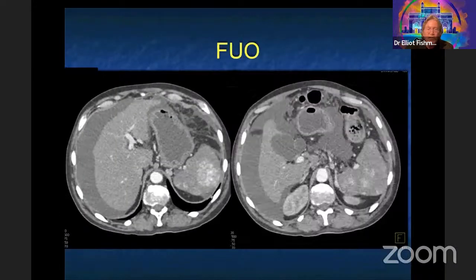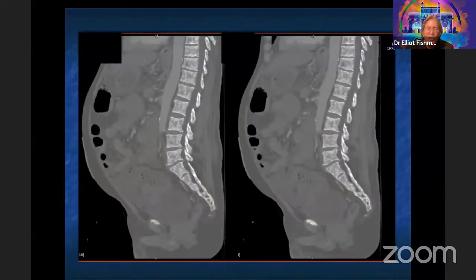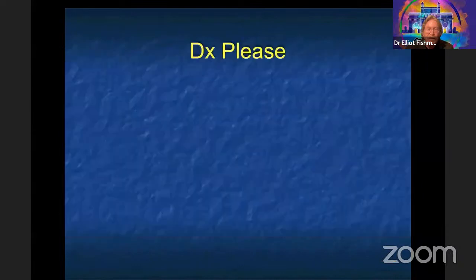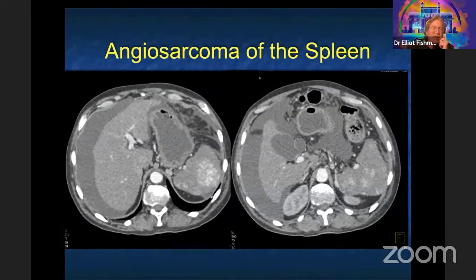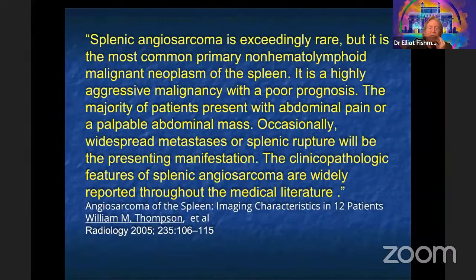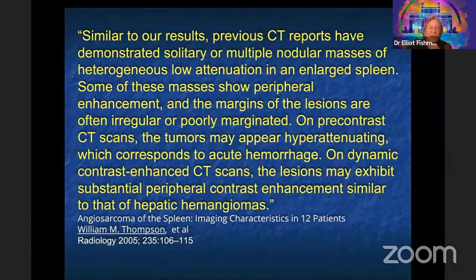You can see sclerotic bone lesions, then a vascular lesion in the spleen. Hemangiomas can be vascular, but this is diffusely vascular — you have ascites and widespread blastic bone lesions. Someone suggested angiosarcoma — very good. We've had three cases of angiosarcoma in the last four or five months; they're exceedingly rare. They can cause splenic rupture. The lesions may exhibit substantial enhancement. Hemangiomas are better defined.